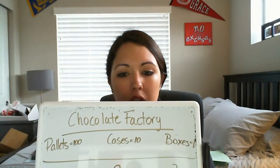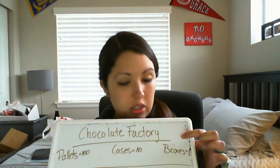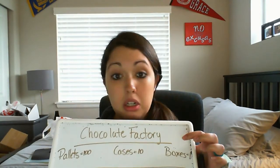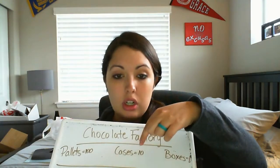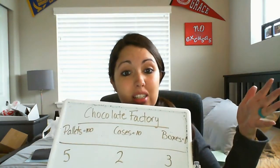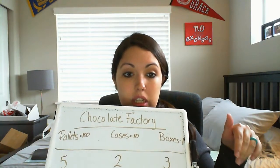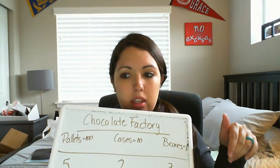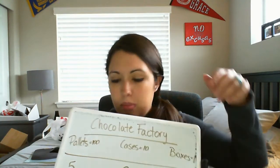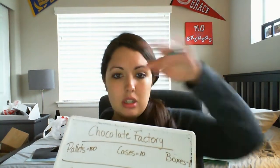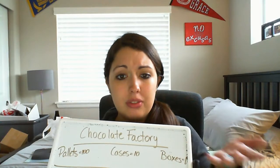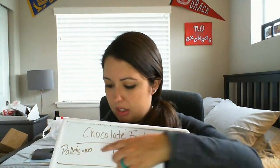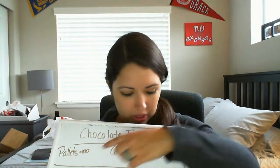So a chocolate factory starts out with boxes of chocolate — one box equals one — and cases of chocolate, which is a big box that fits ten boxes. Then there are pallets, which they use forklifts to move around, and each pallet fits 100 boxes or ten cases.